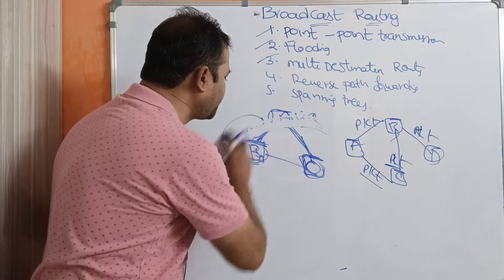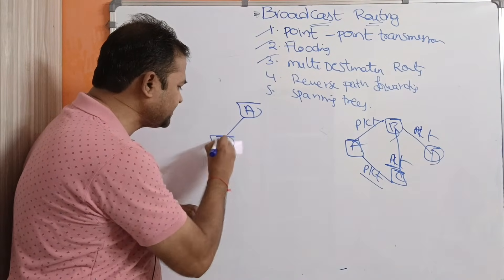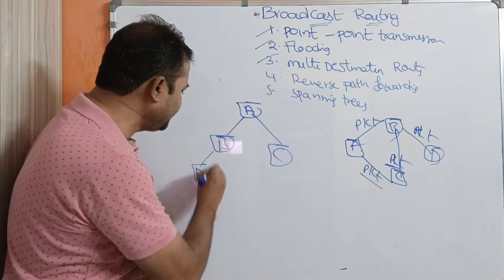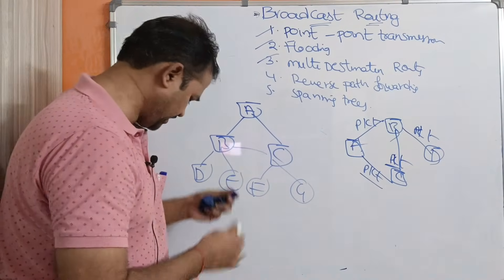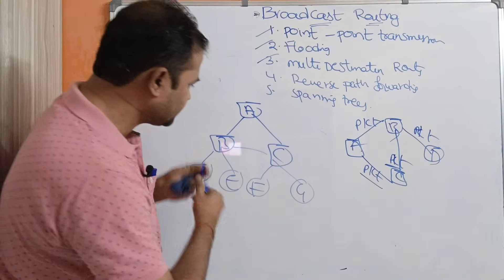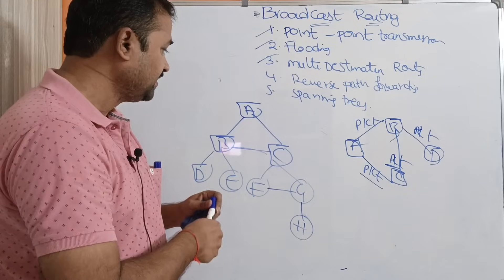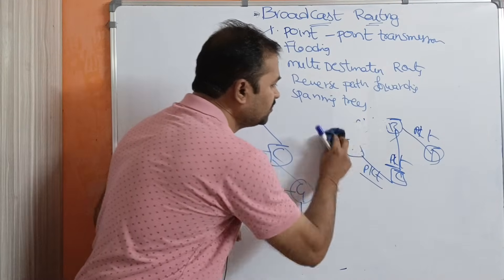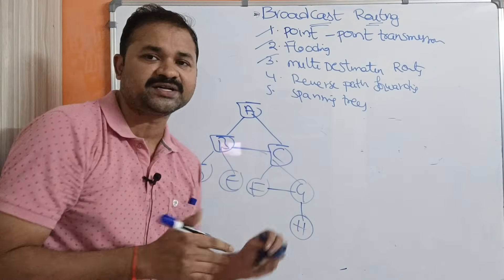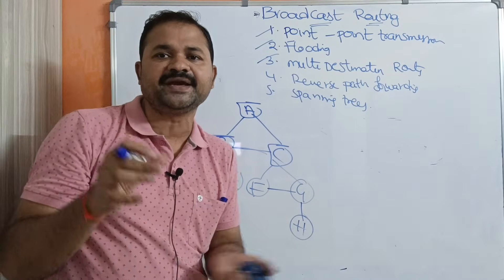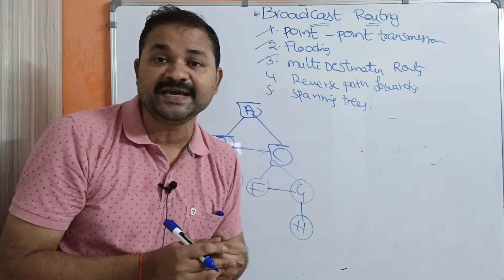Now let us see the fifth approach: spanning trees. Consider a graph containing routers A, B, C, D, E, F, G, and H with connections between them. A spanning tree must contain all the routers but must not have any cycles. A cycle occurs when the source and destination vertex in a path are the same. So spanning trees must be cycle-free.